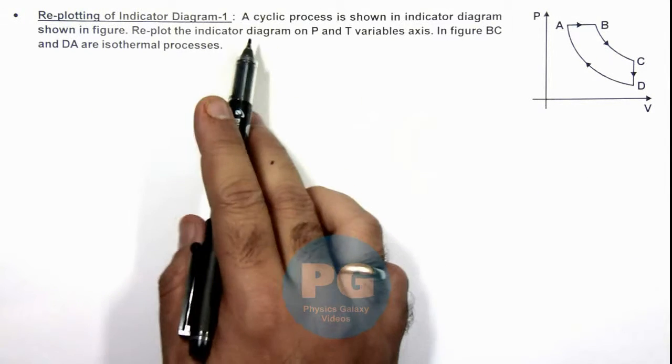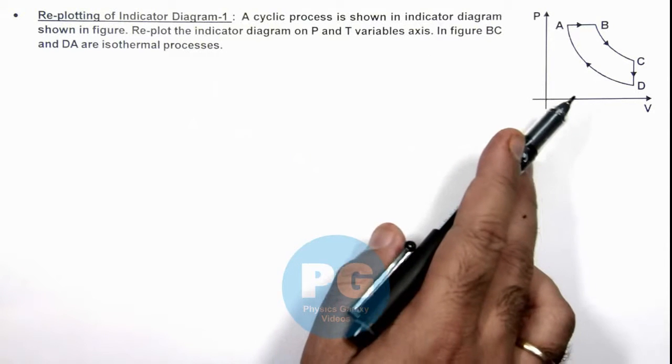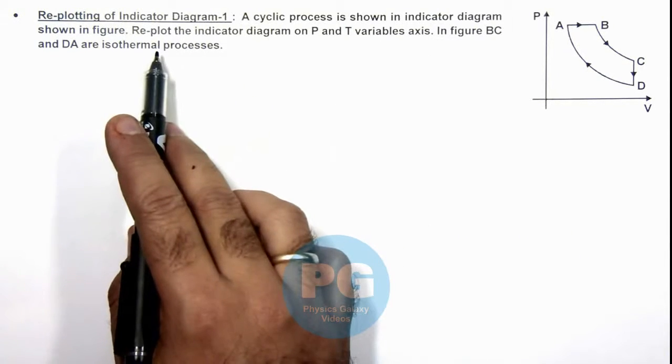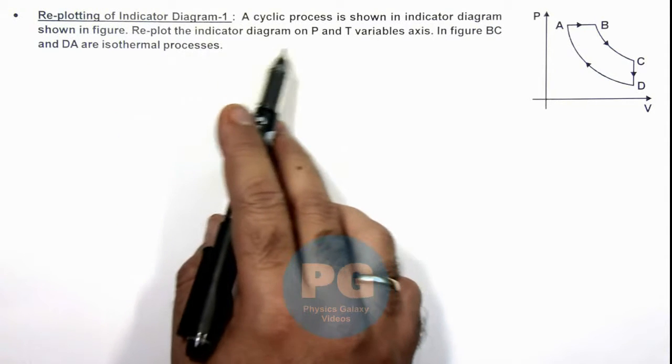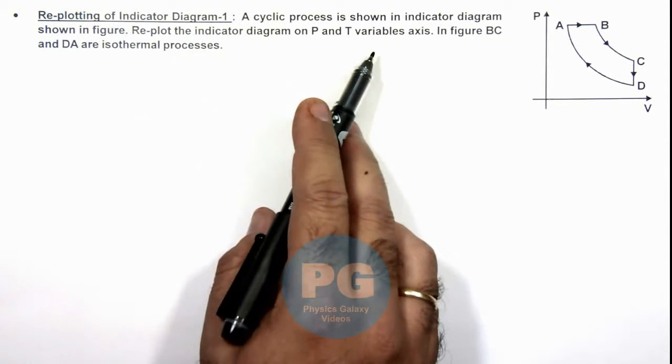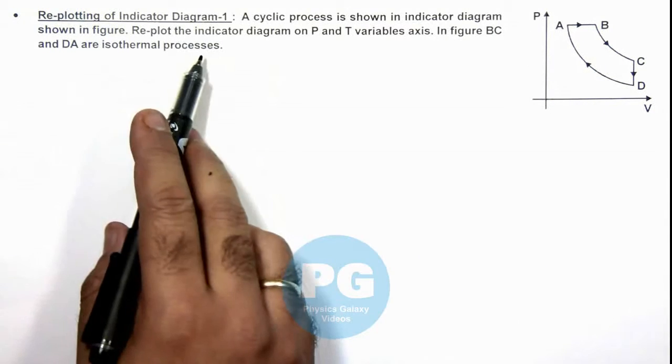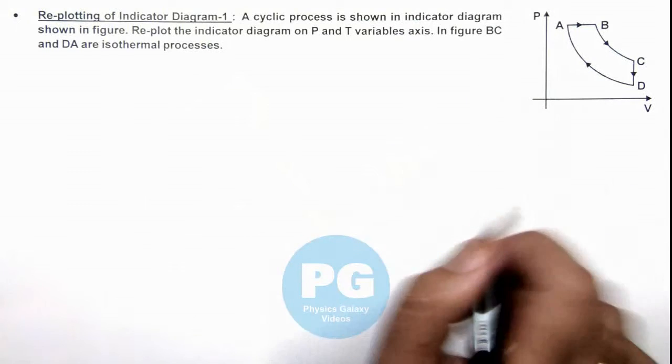Here we are given that a cyclic process is shown in an indicator diagram, and we are required to replot the indicator diagram on P and T variable axes. In the figure, we are also given that BC and DA are isothermal processes where temperature remains constant.